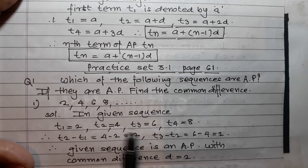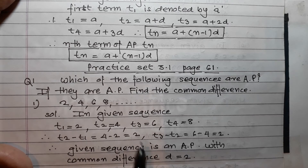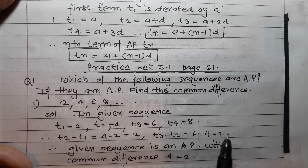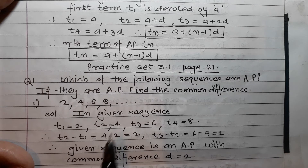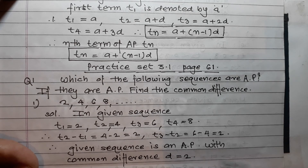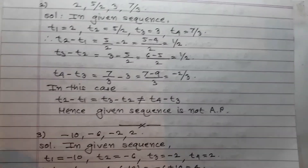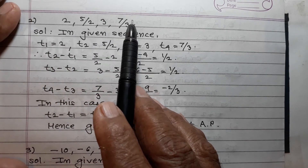Question 1: 2, 4, 6, 8, ... Solution: t1 = 2, t2 = 4, t3 = 6, t4 = 8. Common difference: t2 - t1 = 4 - 2 = 2, and t3 - t2 = 6 - 4 = 2. After adding 2 to each term you get the next term, and hence the given sequence is an AP with common difference d = 2.